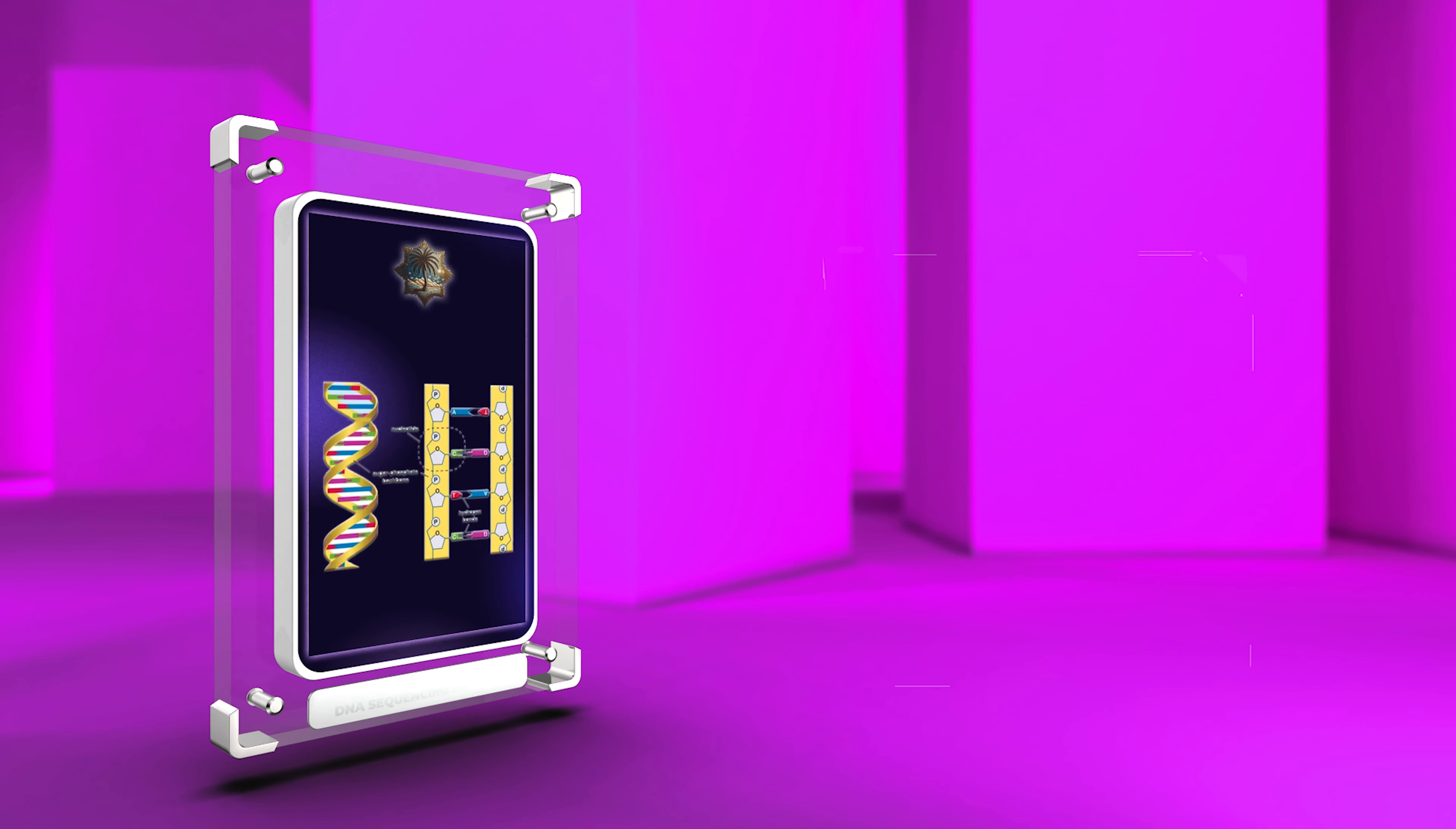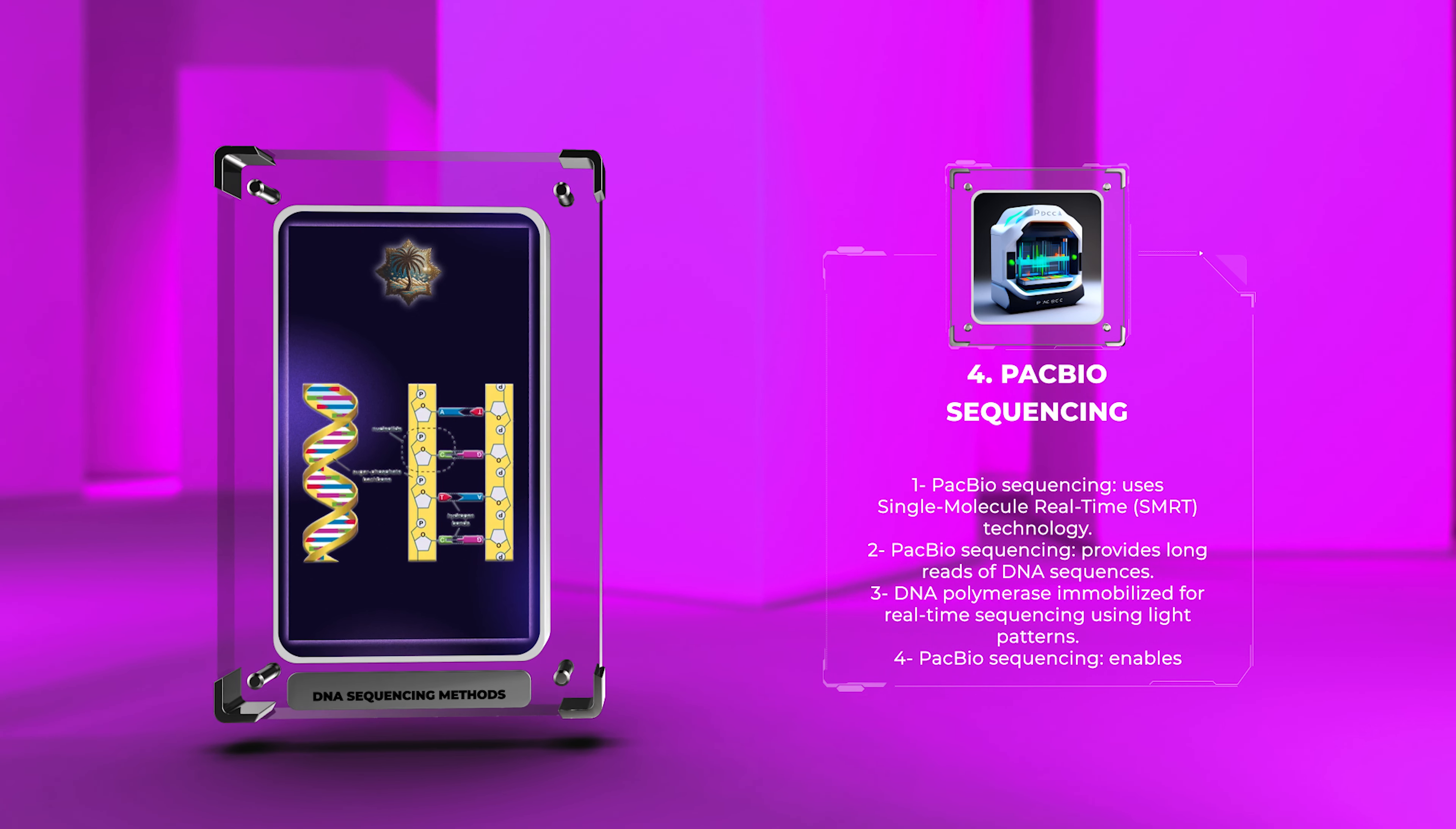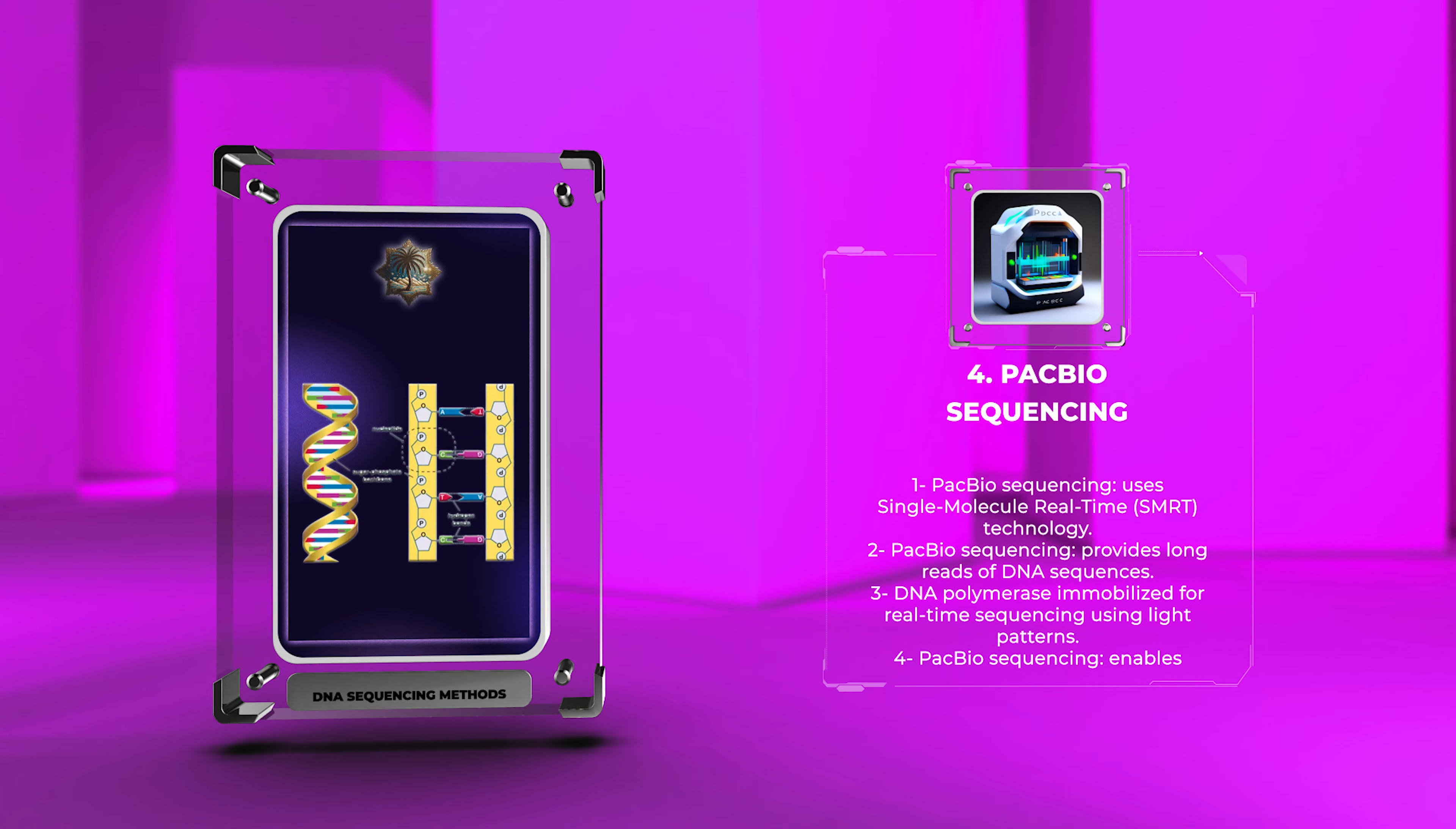PacBio sequencing uses single-molecule real-time, SMRT, technology to provide long reads of DNA sequences. DNA polymerase is immobilized and real-time sequencing of individual molecules is done using characteristic light patterns. This enables studying structural variations, allele-specific expression, and complex genomic regions.